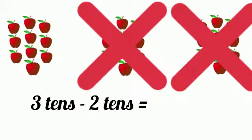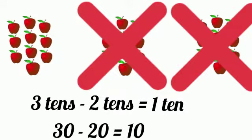How many left? Yes, 1 ten. So, 3 tens minus 2 tens is 1 ten. Or, we can say 3 tens means 30. 30 minus 20 is 10.